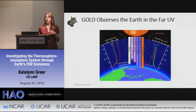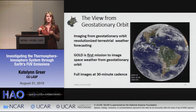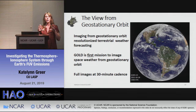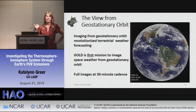To reiterate: we're working in the far ultraviolet, which helps us get at the temperature and constituents of the thermosphere. One of the exciting things about GOLD is that it images Earth from a geostationary vantage point rather than low-Earth-orbiting satellites that only pass a location once every hours or days. We get full disk images every 30 minutes, and we hope this will revolutionize upper atmospheric and space weather forecasting just as geostationary observing revolutionized tropospheric weather forecasting.